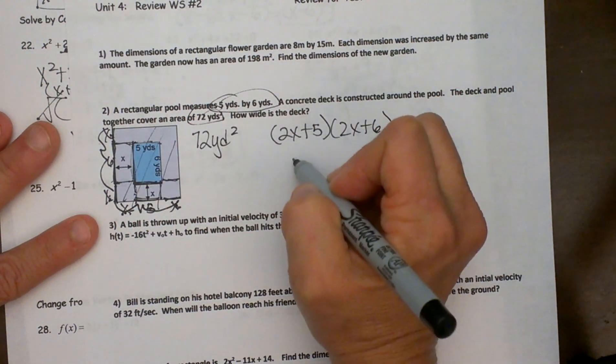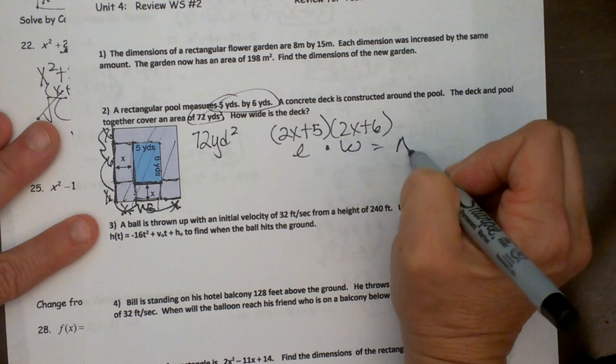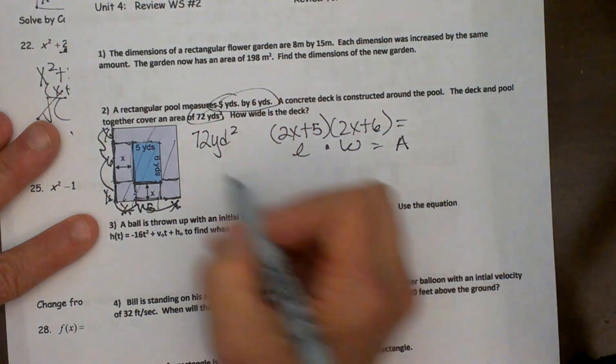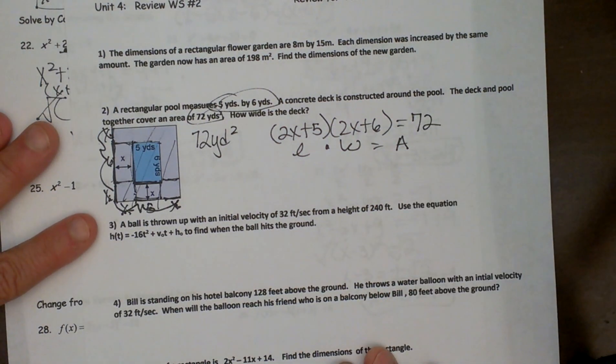And that gives me a length times a width. And a length times a width gives me an area. So we are going to set this equal to the area of the whole thing which is seventy two square yards.